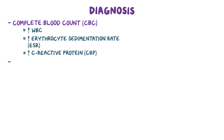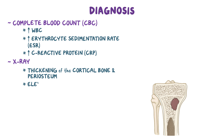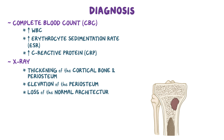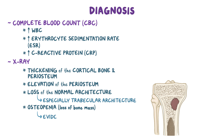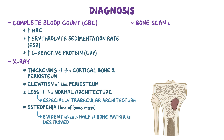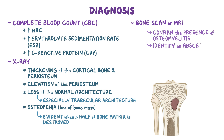In addition, sometimes an x-ray is done, and it might show thickening of the cortical bone and periosteum, as well as an elevation of the periosteum. Other findings may include loss of the normal architecture of the bone, especially of the trabecular architecture. There's also osteopenia, or loss of bone mass, that becomes evident when more than half of the bone matrix is destroyed. Typically a bone scan or MRI is done to help confirm the presence of osteomyelitis and to identify a possible abscess. When possible, a bone biopsy is also taken to help culture and identify the pathogen responsible, as well as confirm the diagnosis.